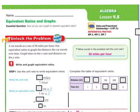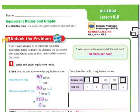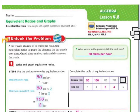Write and graph the equivalent ratios. Use the unit rate to write them. We have 50 miles per hour. Multiply the top and bottom by 2 to get 100 miles for every 2 hours. So: 50 miles for 1 hour, 100 miles for 2 hours, 150 miles for 3 hours, 200 miles for 4 hours, and 250 miles for 5 hours.